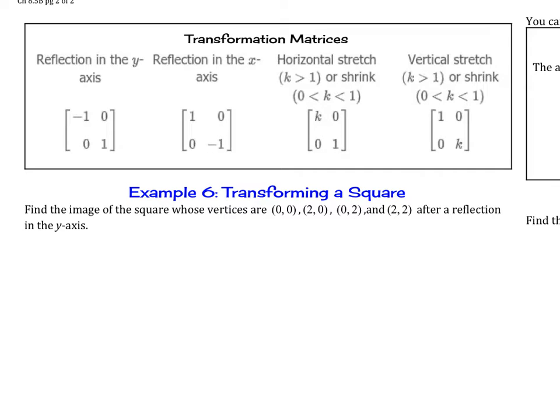Next we're going to take a look at transforming matrices. So we see these transformation forms here: reflection in the y-axis with matrix [-1, 0; 0, 1], reflection in the x-axis with [1, 0; 0, -1], horizontal stretch or shrink where we have the k values [k, 0; 0, 1], and vertical stretch with [1, 0; 0, k].